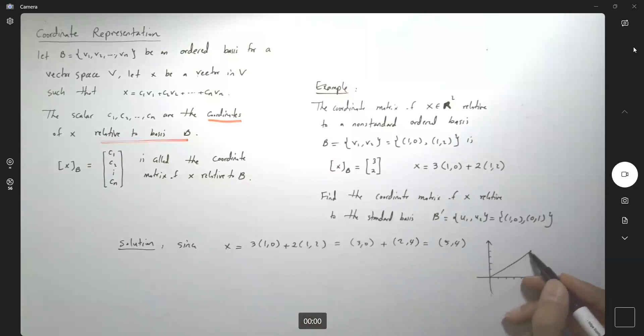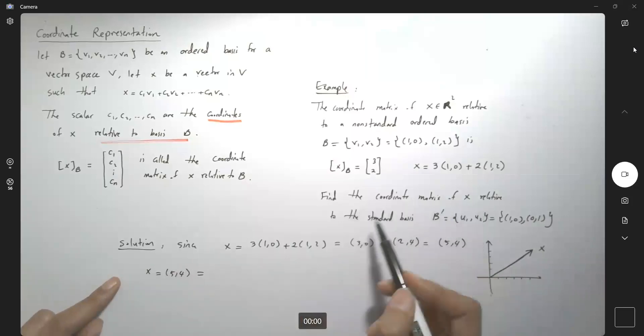So this is the vector that you see representing (5,4). This is my vector x. Well, if I want to write this vector (5,4) using the standard basis, this is basically just 5 times (1,0) plus 4 times (0,1). So the coordinates are 5 and 4.